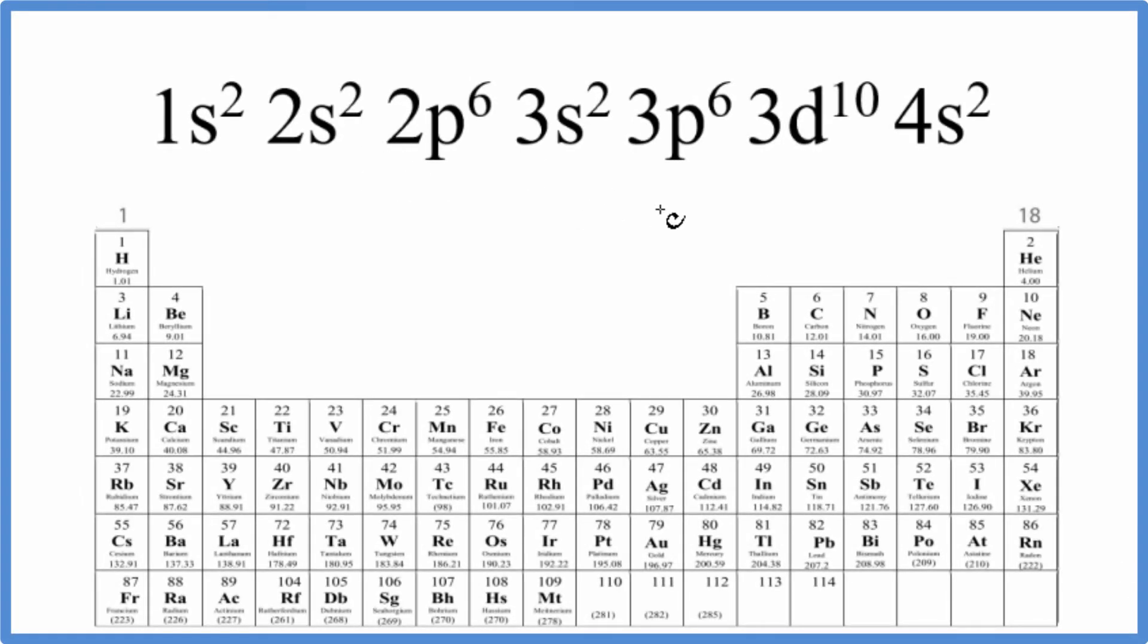There are two ways to figure out which element on the periodic table is represented by this electron configuration ending in 3d10 4s2.